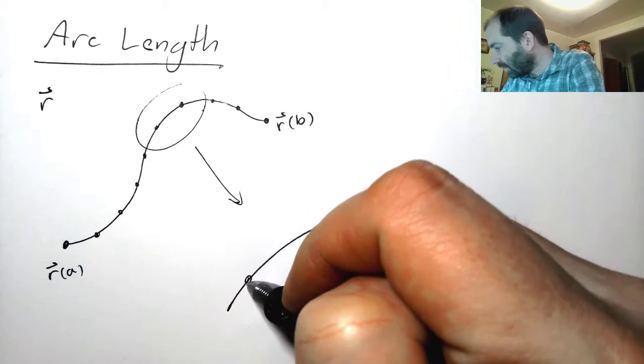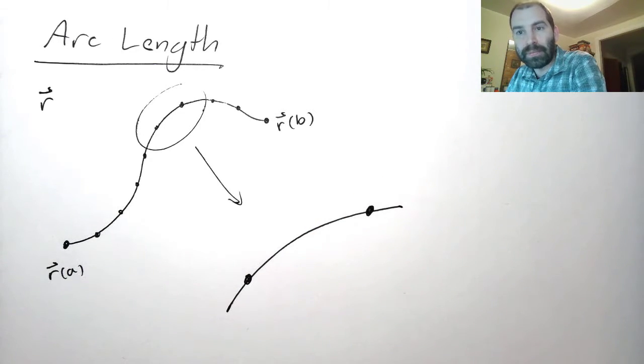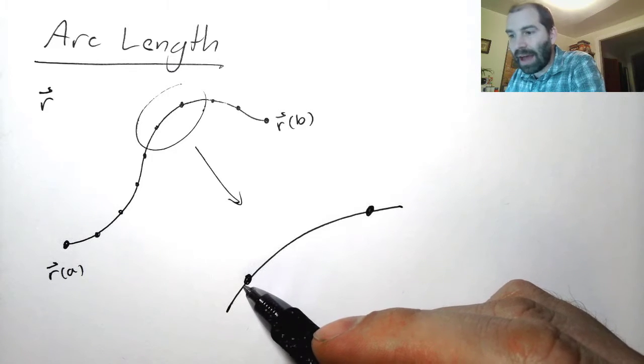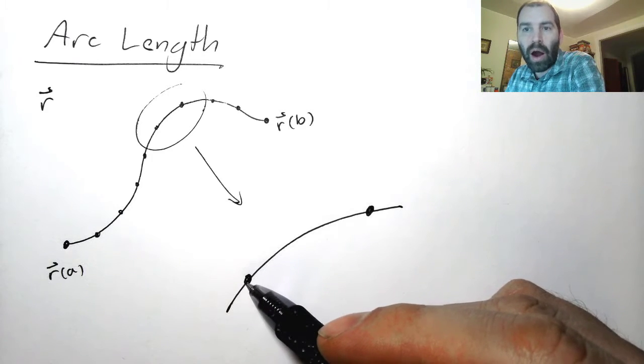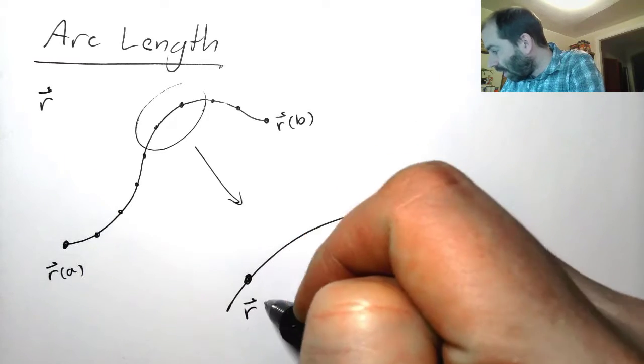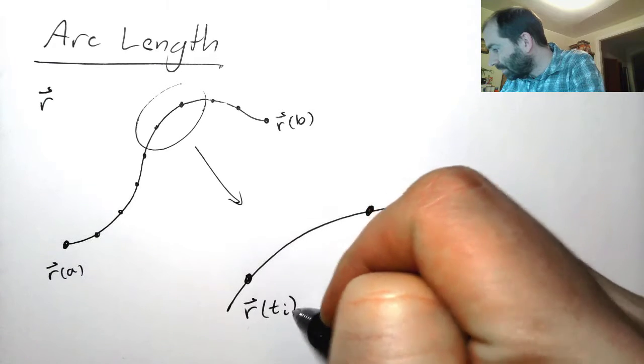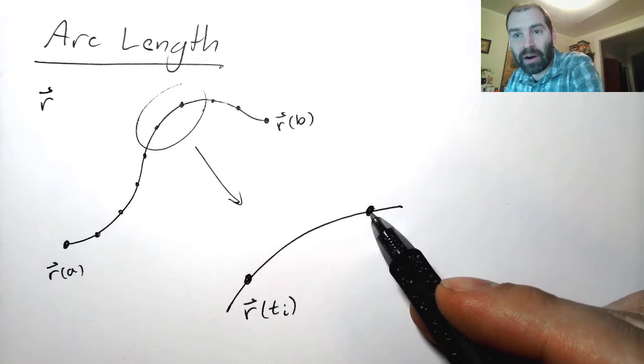Here's one partition point, and here's the other partition point. Now this is the value of r at some t. So let's call this r of ti.